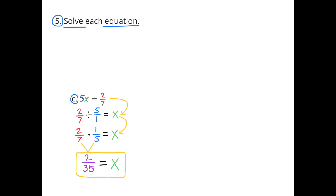C: 5 halves equals 2 sevenths x. That can be rewritten as 2 sevenths divided by 5 over 1 equals x. Multiplying by the reciprocal: 2 sevenths times 1 fifth equals x, and 2 sevenths times 1 fifth equals 2 thirty-fifths. So x equals 2 thirty-fifths.